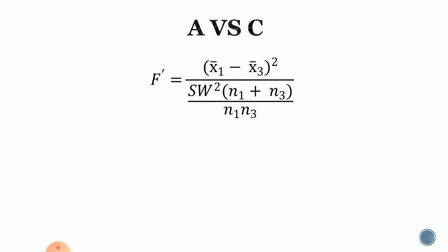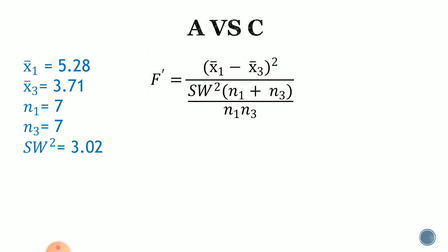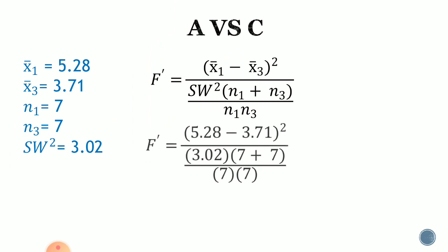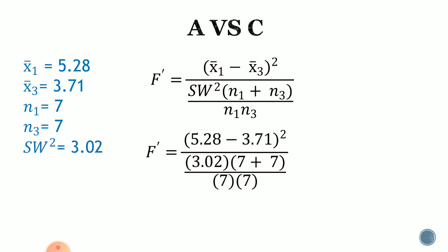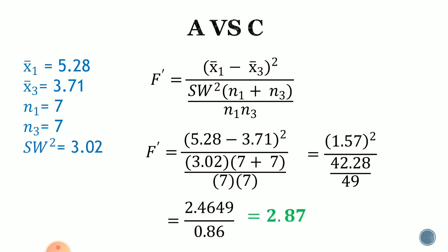Next is A versus C. The mean of group 1 is 5.28, and the mean of group 3 is 3.71. N sub 1 and N sub 3 are both 7, and SW squared equals 3.02. Substituting into the formula: the quantity 5.28 minus 3.71, squared, all over 3.02 times the quantity 7 plus 7, all over 7 times 7. That gives 1.57 squared over 42.28 over 49, equal to 2.4649 divided by 0.86, which equals 2.87.